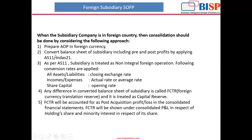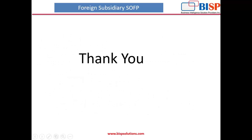We need to prepare the AOP in foreign currency to derive the pre and post profits, then include those profits in the balance sheet, and convert the balance sheet of the subsidiary into the parent country's reporting currency as per AS11. The subsidiary is treated as non-integral foreign operations. The following conversion rates are applied: all assets and liabilities are converted using the closing exchange rate; incomes and expenses are converted using the actual or average rate; share capital is converted using the opening rate. Any difference in the converted balance sheet of the subsidiary is called FCTR (Foreign Currency Translation Reserve), treated as capital reserve. FCTR is accounted for as post-acquisition profit or loss in the consolidated financial statements.